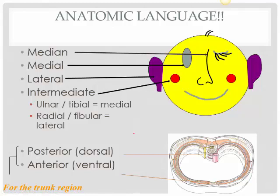Let's look at some other anatomical terms. These terms are relative. Median means right in the midline. Medial means anything close to the midline; lateral means anything further away from the midline; intermediate means something in between. For example, looking at the eye, cheek, and ear: the eye is medial to the cheek and the ear; the cheek is intermediate; the ear is lateral. If I compare the ear with the shoulder, the ear is medial to the shoulder. So while the ear is lateral to the eye, it is medial to the shoulder — these relationships are relative depending on which structures you are comparing.